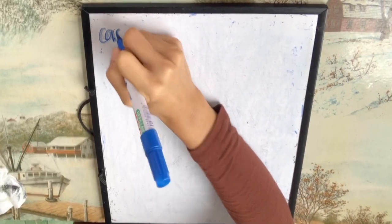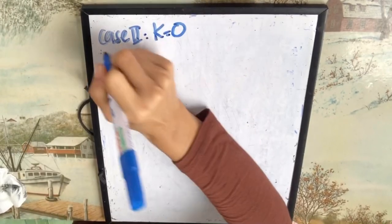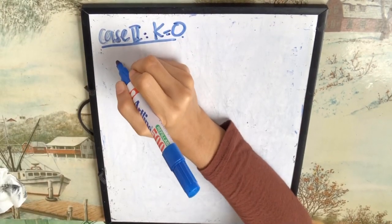Okay, so we proceed to case number 2. Case number 2 is k equal to 0. So same thing, you start with x equation.